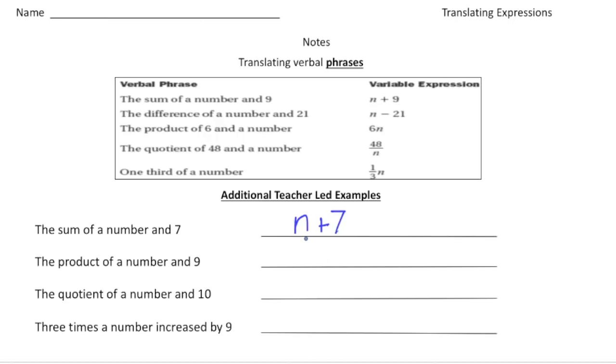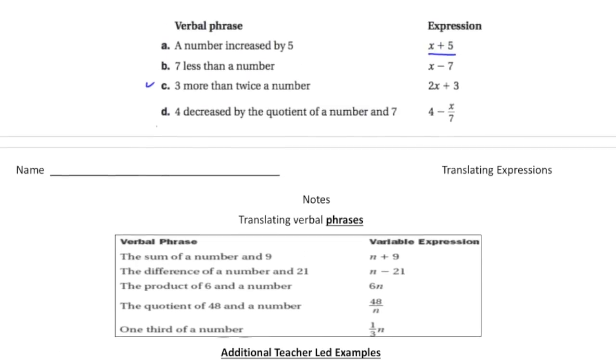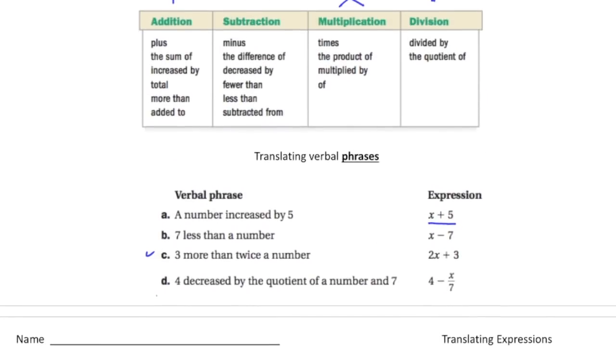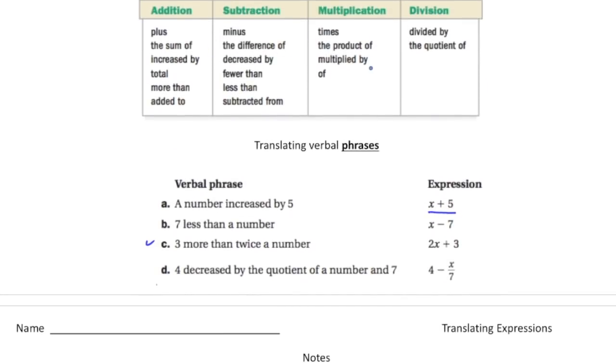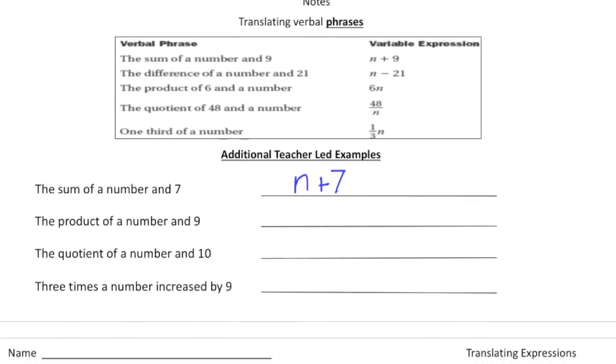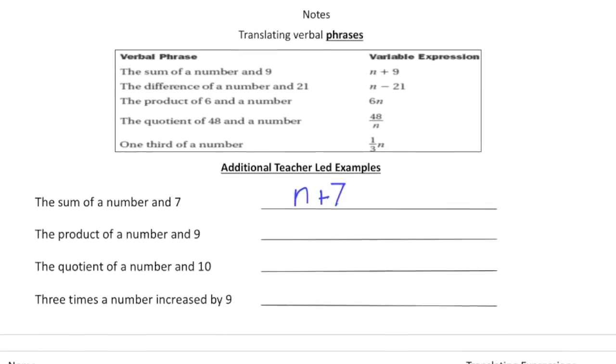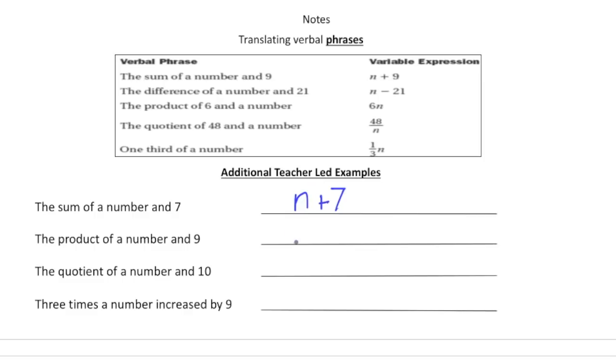The next one, product. Product is associated with multiplication and again if you need to we can go back to the first page and look up where that word is. So the product of a number and nine, that would be written as nine n.